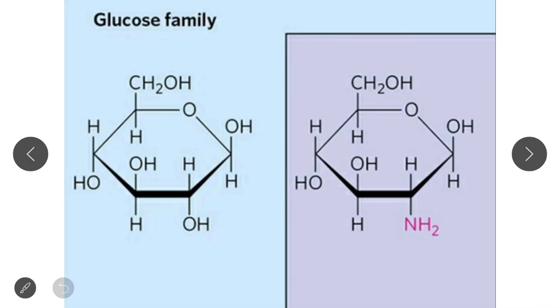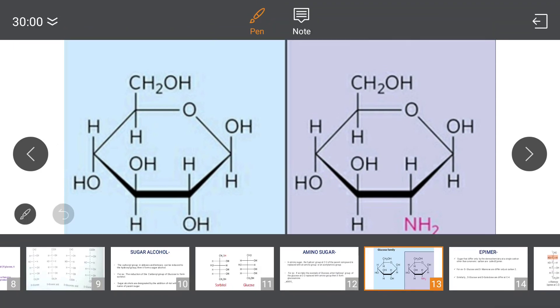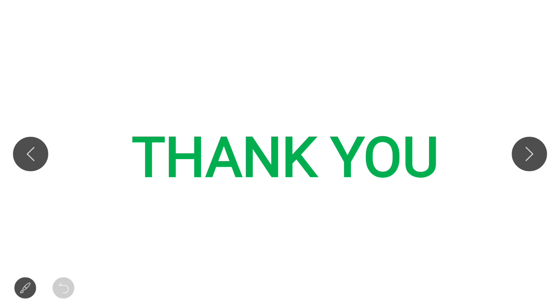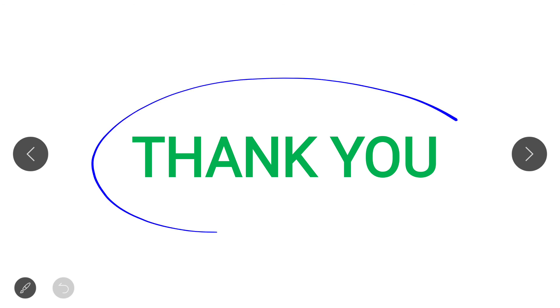So these are the four derivatives of monosaccharide: glycosides, sugar acids, sugar alcohols, and amino sugars. If you have any doubt regarding any of these derivatives, please comment. With this, we end the first part of the carbohydrate lecture — that is, the monosaccharide section. Thank you.